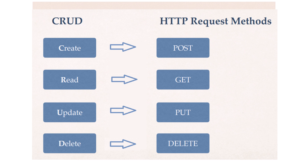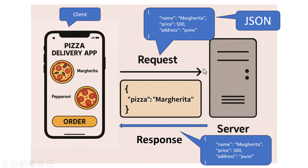So these four actions — GET, POST, PUT, DELETE — are the common ways a REST API lets software applications work with data. When an app sends a request to a REST API, it usually sends a small package of information written in a format called JSON, which stands for JavaScript Object Notation. JSON is simply a way to send structured data like a pizza name, pizza price, and delivery address. The server receives the JSON, does the work, and then replies again in JSON format, which confirms an update or an error message.